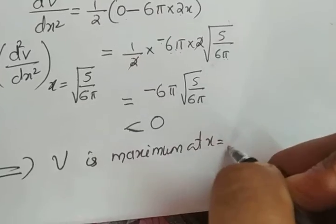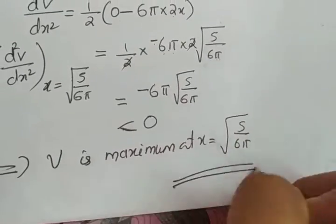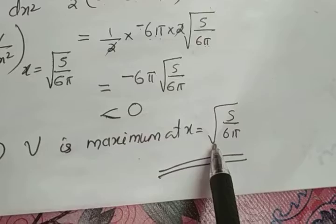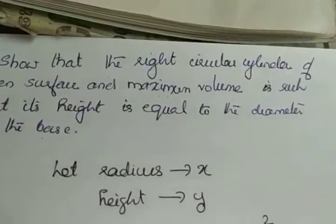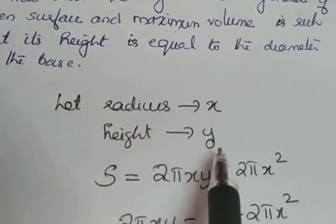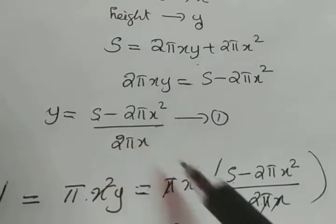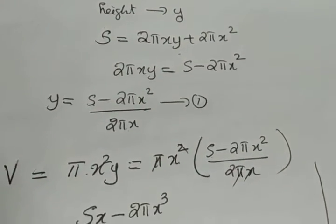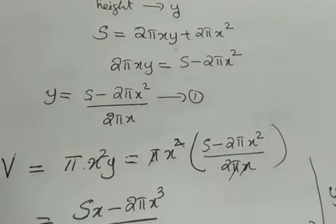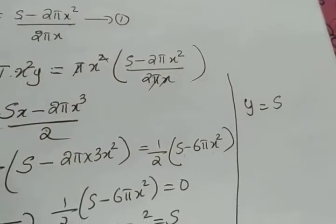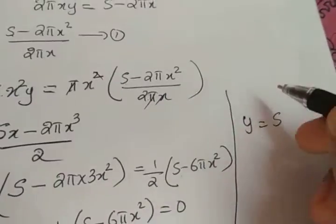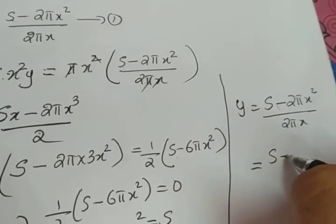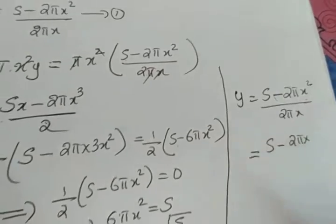So x = √(s/6π) is a local maxima and v is maximum there. Now we have to prove that height y equals the diameter 2x. We use y = (s − 2πx²) / (2πx) and substitute x² = s/(6π).